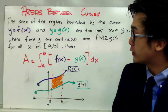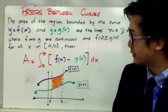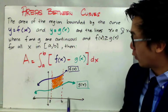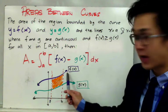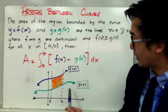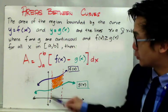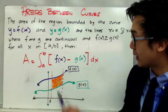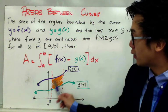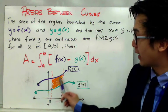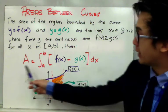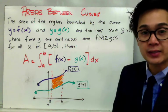If we are going to use a graphical display in finding the area between curves, we have here our x-y plane, our function f(x), and the function g(x), and in between them, in the closed interval a and b, we can find the area between these two curves by using this formula.